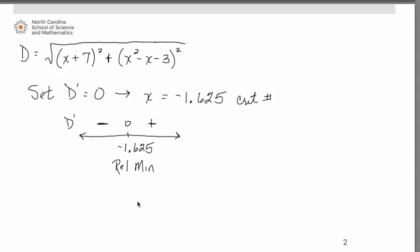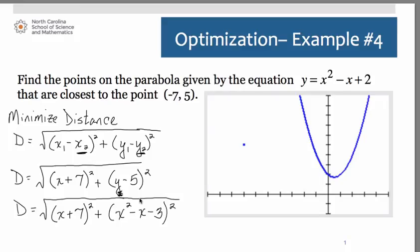We can then answer the question as to what point is going to be the closest. If we go back to the graph, we just figured out it has an x value of negative 1.625. So that would be right around here. So if I trace that up, that's going to hit right around here on the curve.